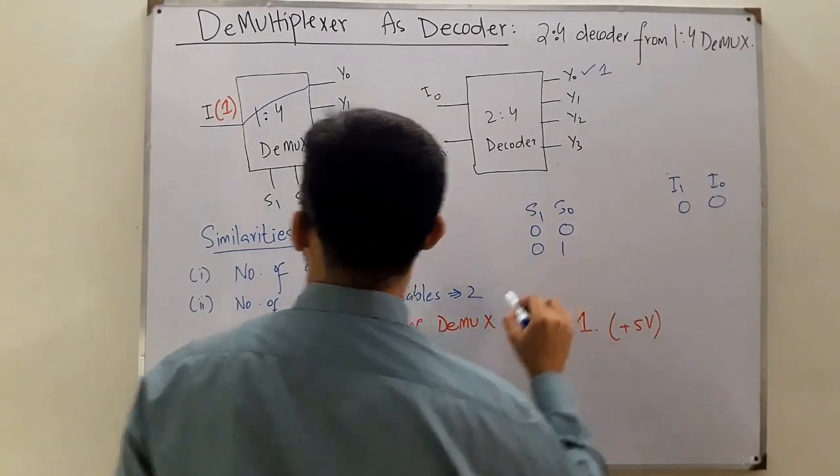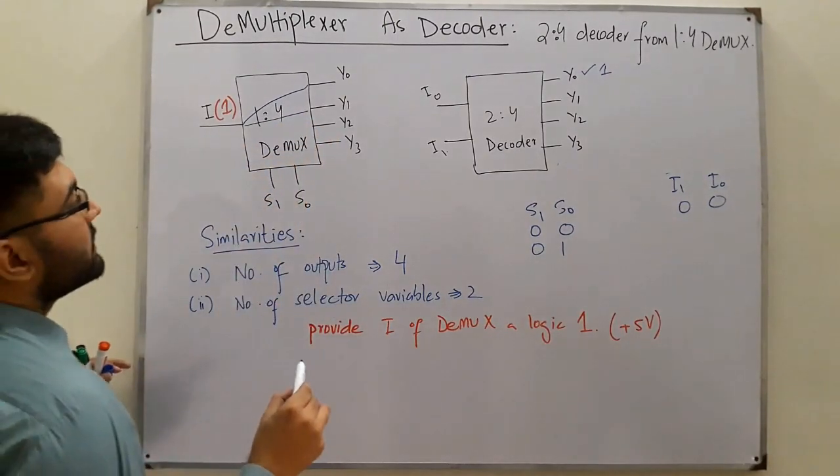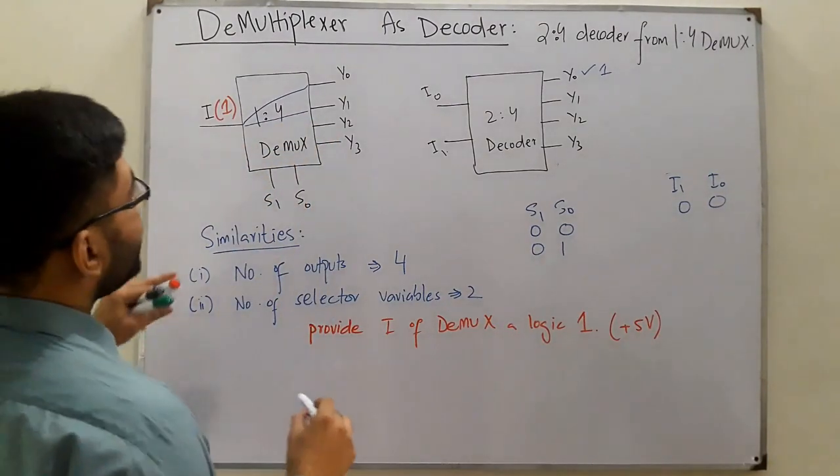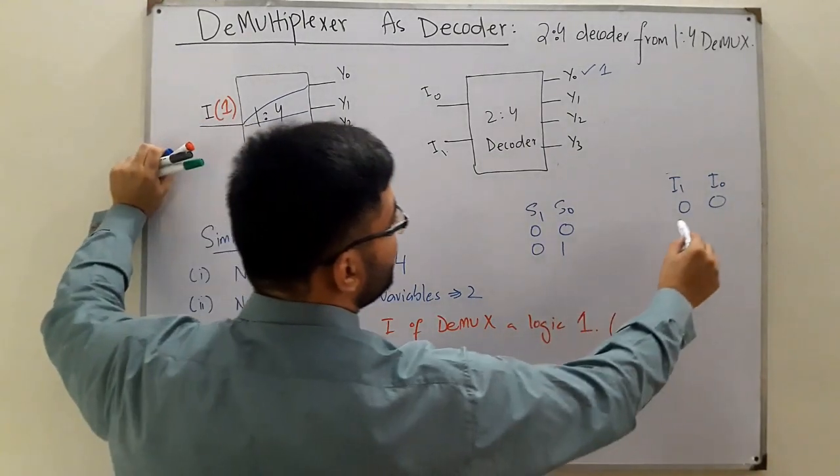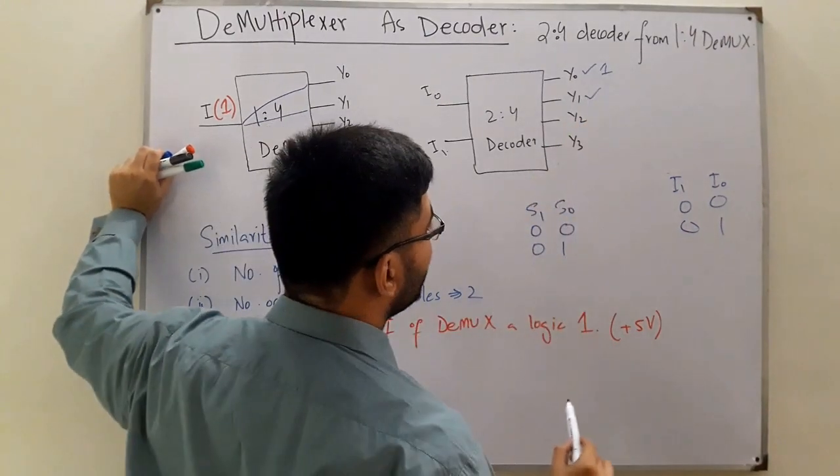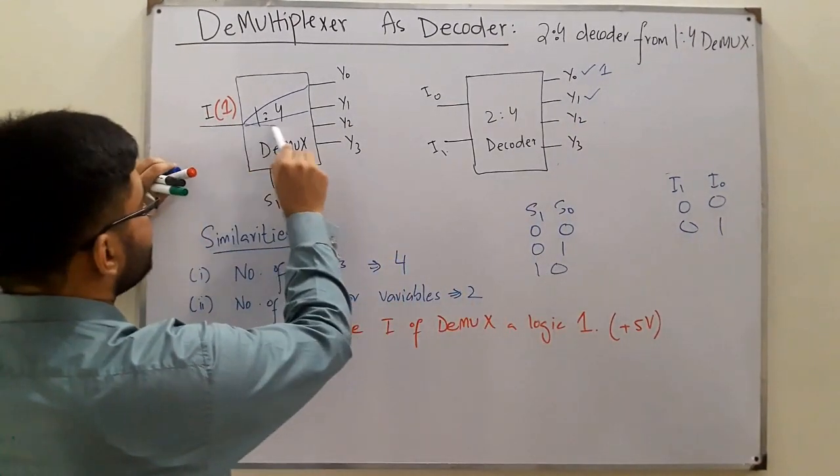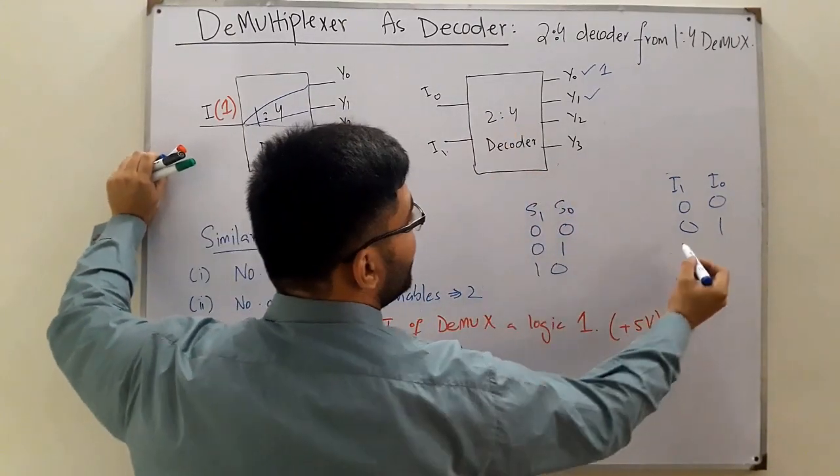If you have 01, this is connected to Y1, which means Y1 would be set high. Similarly, if you have 01, Y1 is set high in decoders. If you have 10, this would be connected to Y2, and Y2 is set as high.